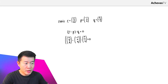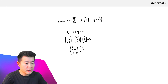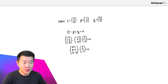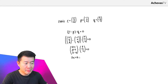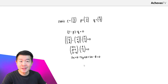So we have (x + 1, y minus 2, z minus 4) dot (3, -5, 2) equals zero. Evaluating the dot product: the first components give 3x + 3, the second components give minus 5y + 10, and the third components give 2z minus 8. So 3x + 3 minus 5y + 10 + 2z minus 8 equals zero.